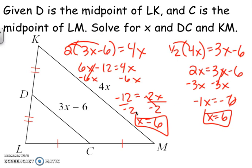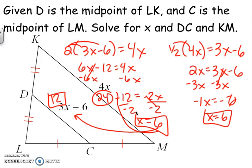We are not done because we need to find CD and KM, so we plug 6 back in. Three times 6 is 18, and 18 minus 6 is 12. We can double 12 to get 24, or plug 6 into 4X: 6 times 4 is 24. So it worked out. That's how a mid-segment problem works with equations. Again: two mid-segments equal the third side, or half the third side equals the mid-segment.